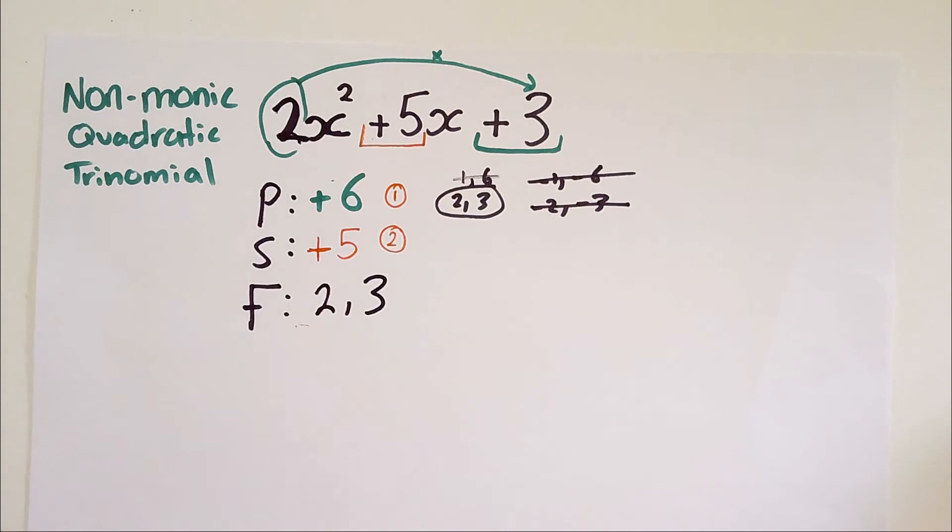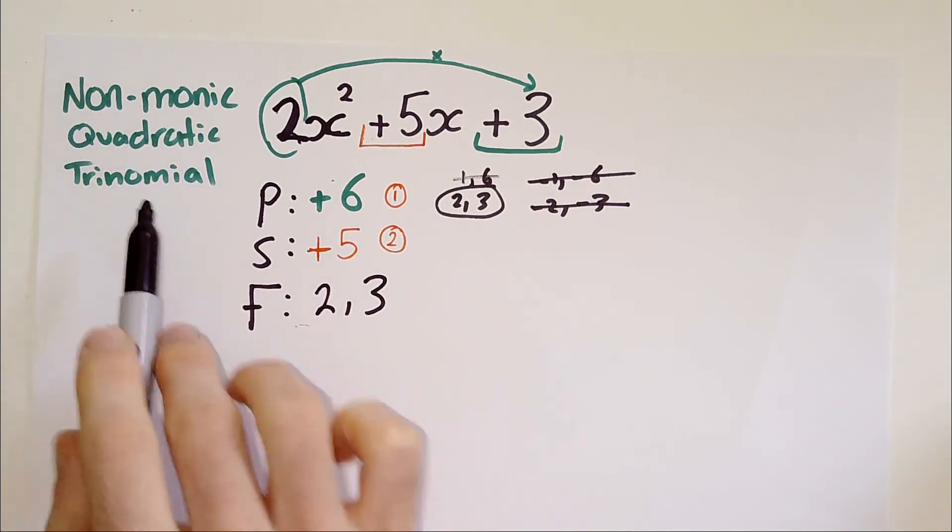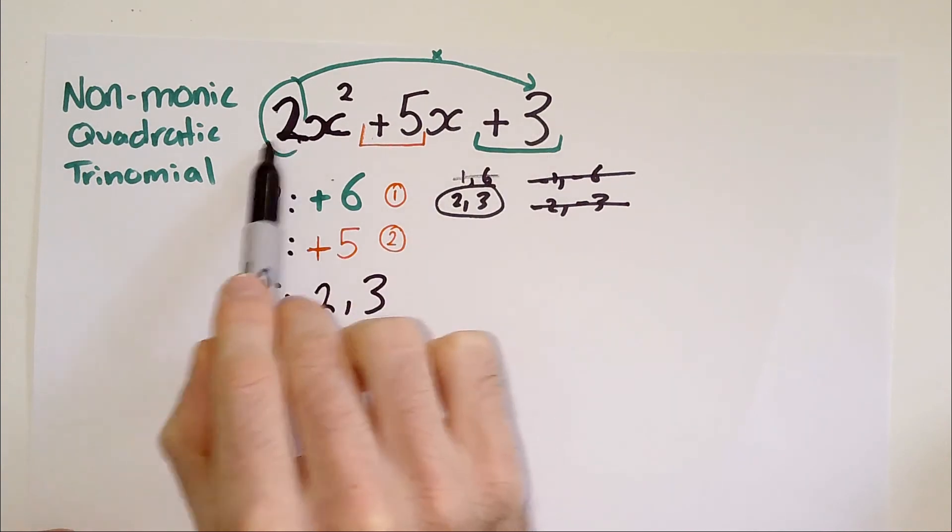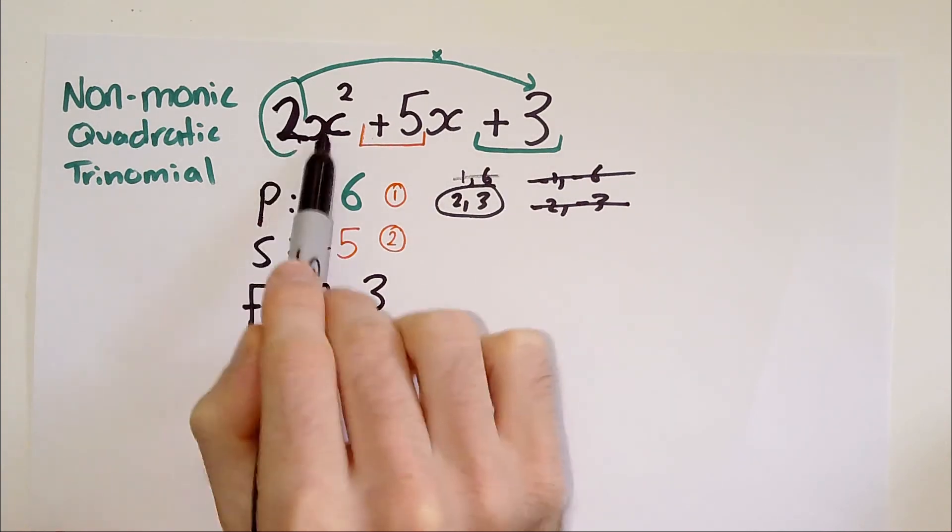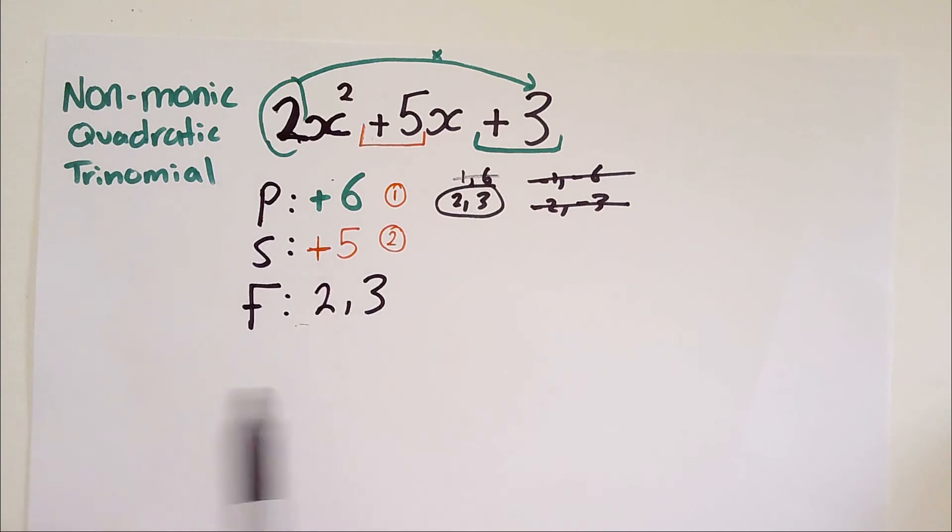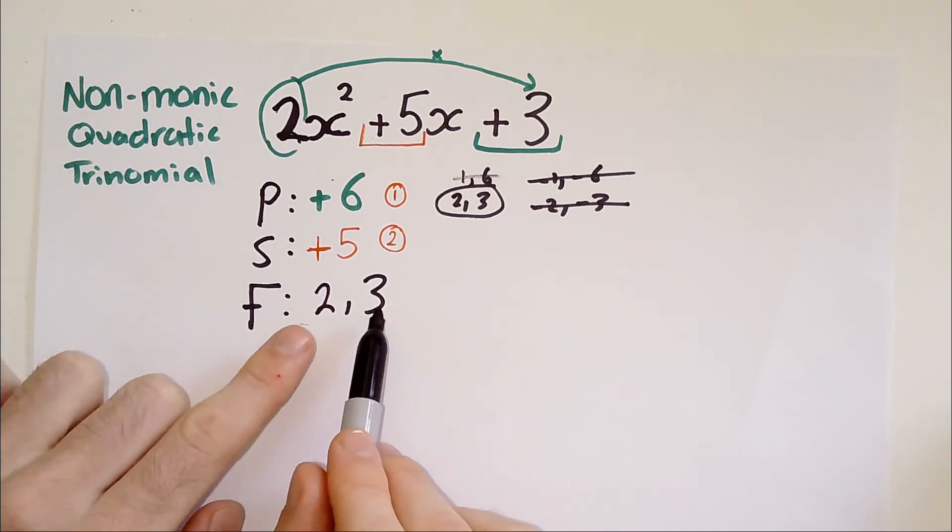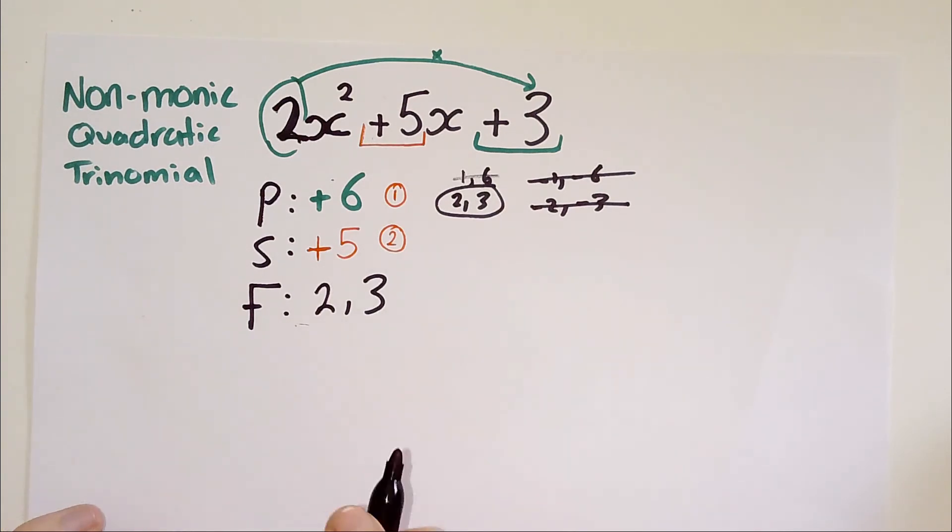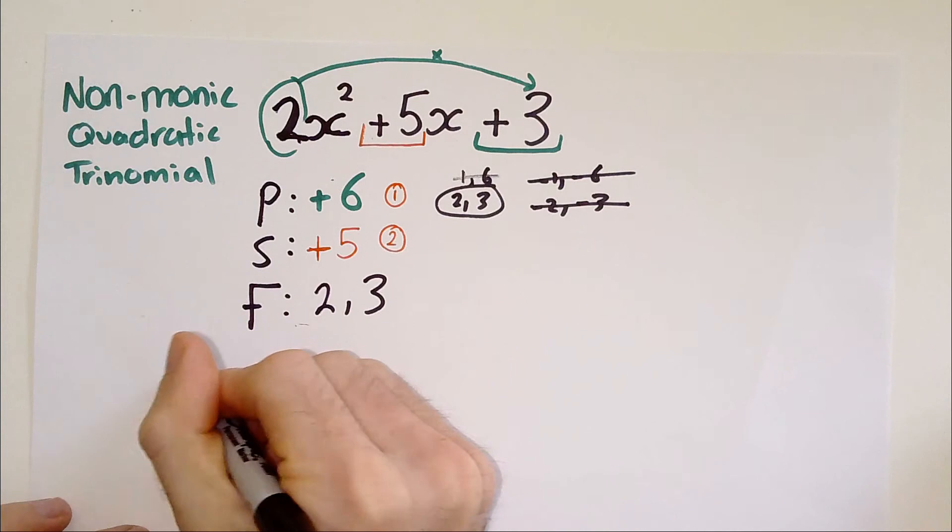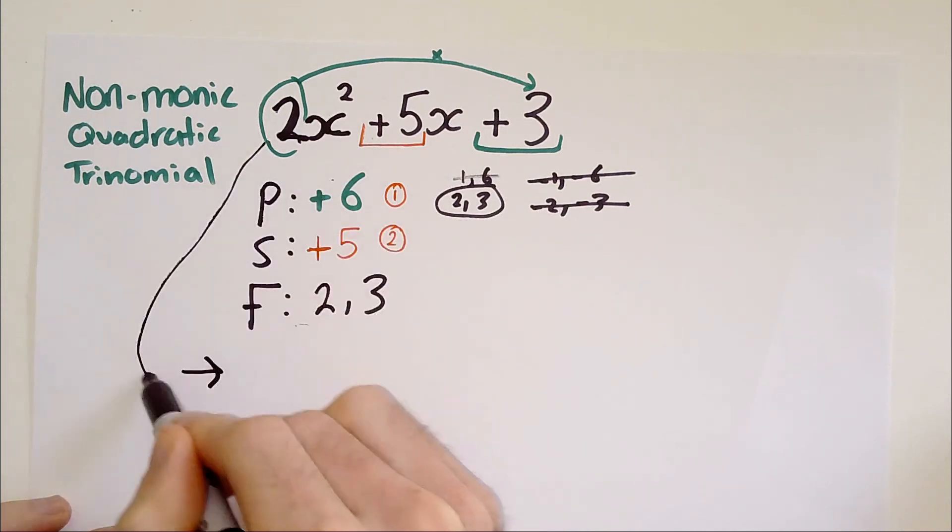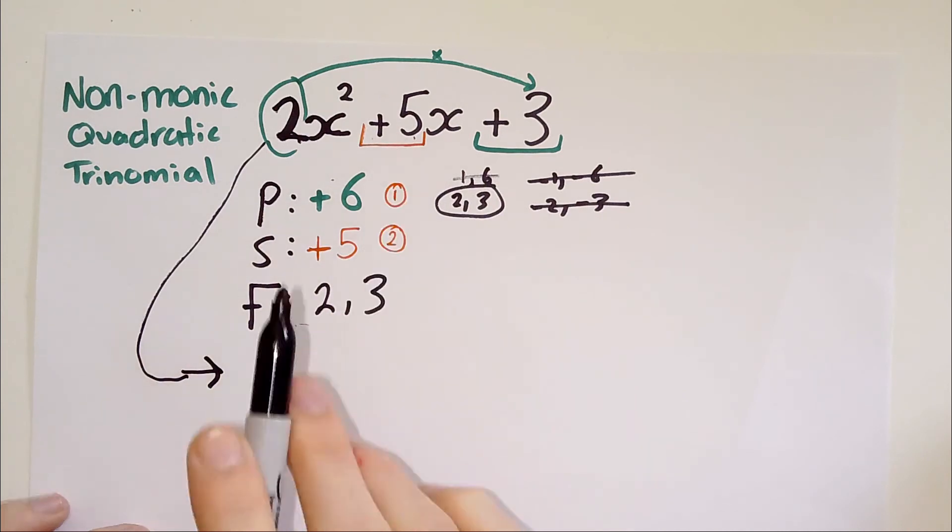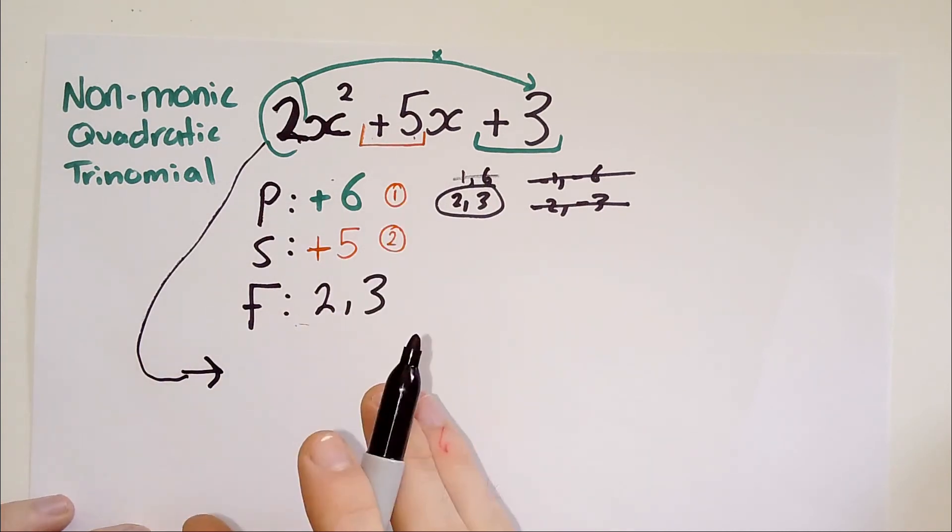Now, this is the second difference with monic quadratic trinomials when you do PSF. The first difference was the P. The second difference is that these numbers here don't go straight into the brackets. We're not going to get straight to the answer here. What we're going to do is rewrite this expression by splitting up the middle term.